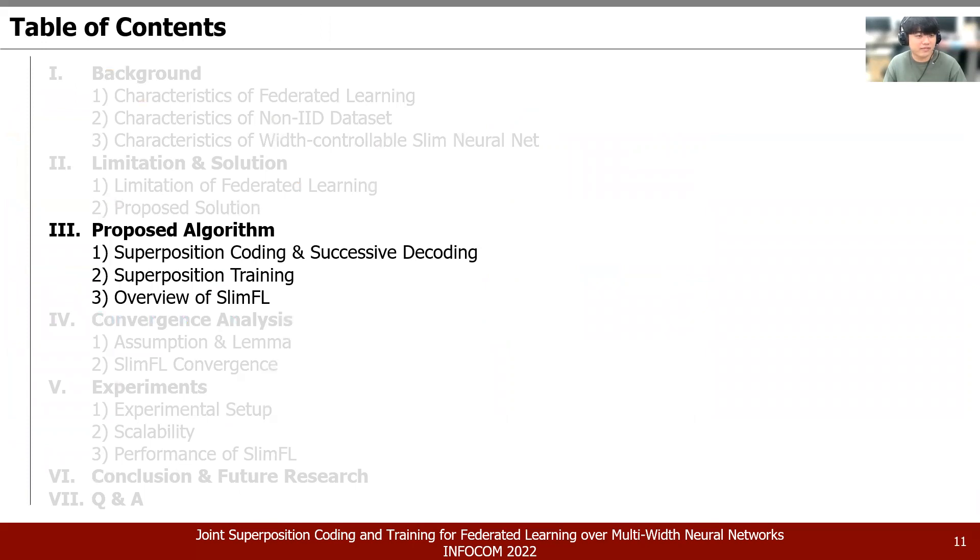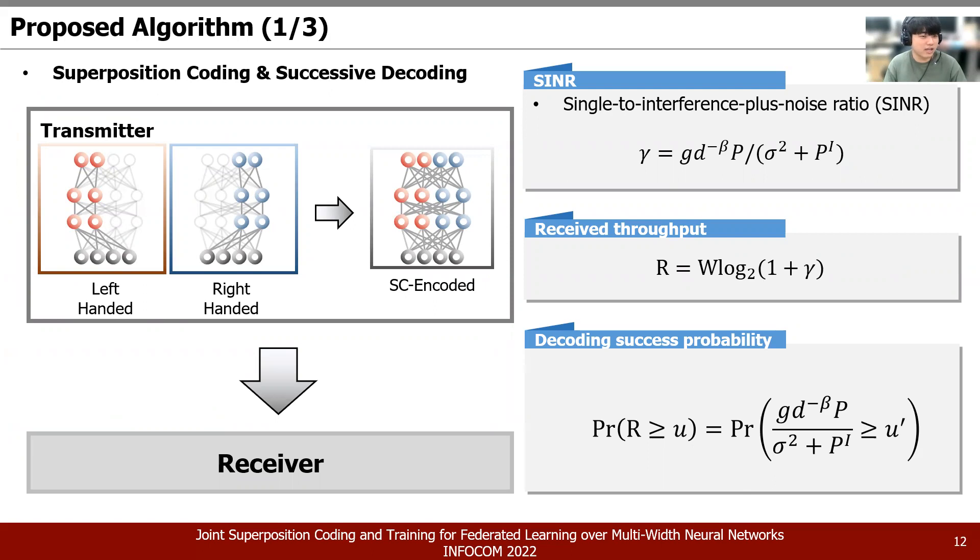After that, our proposed algorithm which can benefit from the communication environment will be explained. Let me introduce the communication model in superposition coding and successive decoding used by our proposed model. First, we set the signal to noise plus interference ratio SINR as the first equation. P is the transmission power, P_I is received interference, and sigma square is the noise power, and D represents the distance between the transmitter and receiver. By setting the SINR like this and adopting Shannon's capacity formula, the received data rate R with bandwidth W can be denoted as the second equation. With the preset environment that fully represents the realistic communication, we can get the decoding success probability as the final equation. U is the parameter about the code length and bandwidth, and here we can observe that by balancing P, the success probability of transmission can be considered.